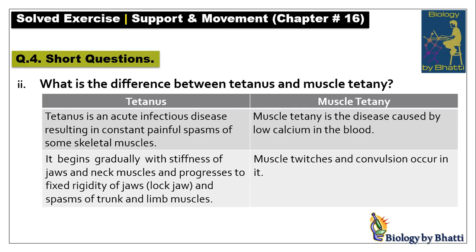Short question number two: what is the difference between tetanus and muscle tetanus? Tetanus is an acute infectious disease causing constant painful spasms of skeletal muscles, caused by Clostridium tetani. Muscle tetanus is caused by low calcium in the blood. Tetanus begins with jaw and neck muscle stiffness, progressing to fixed density of jaws and spasms of trunk and limb muscles — permanent muscle contraction. Muscle tetanus involves muscle twitches and convulsions.